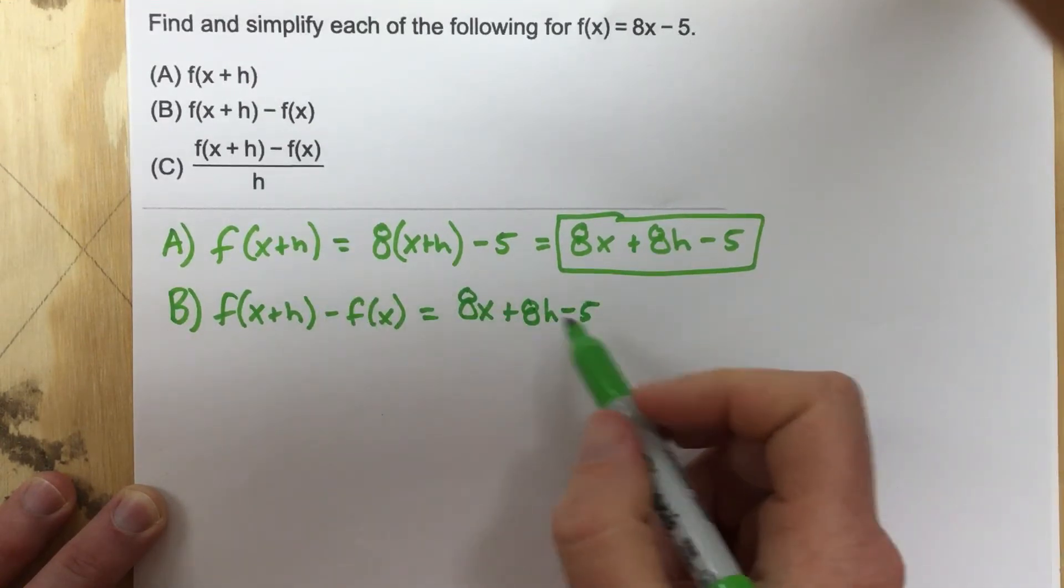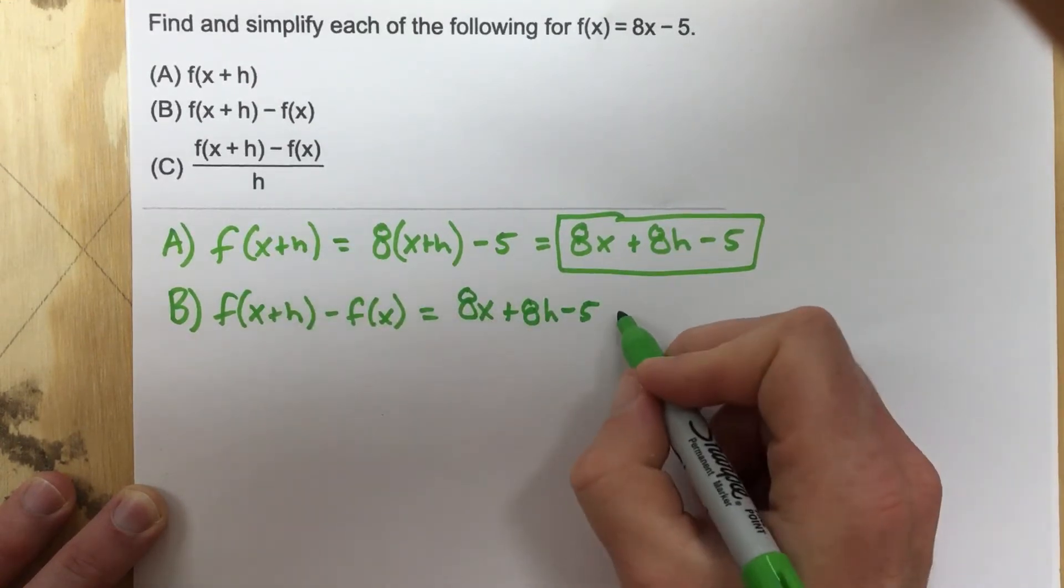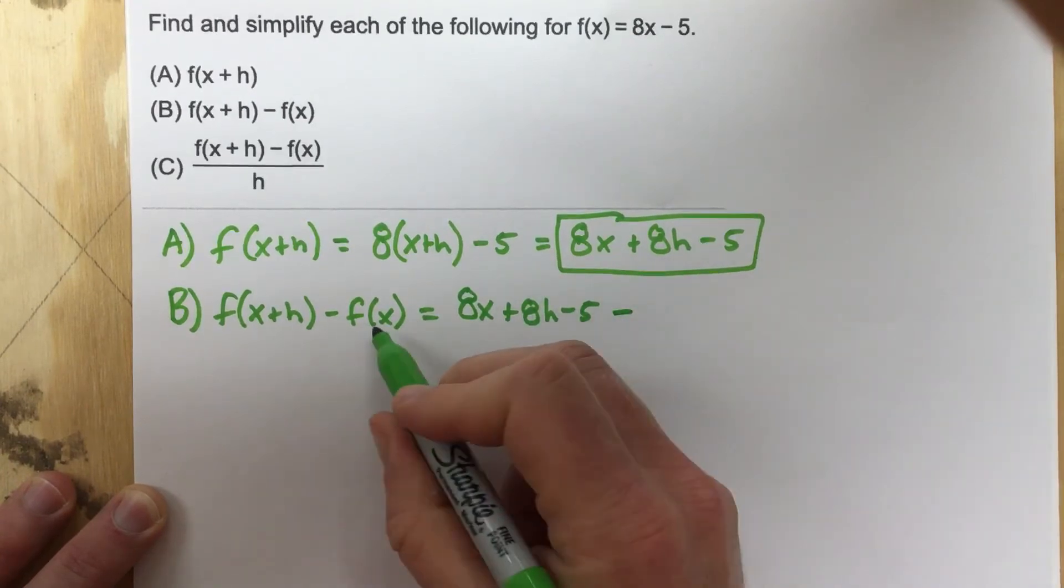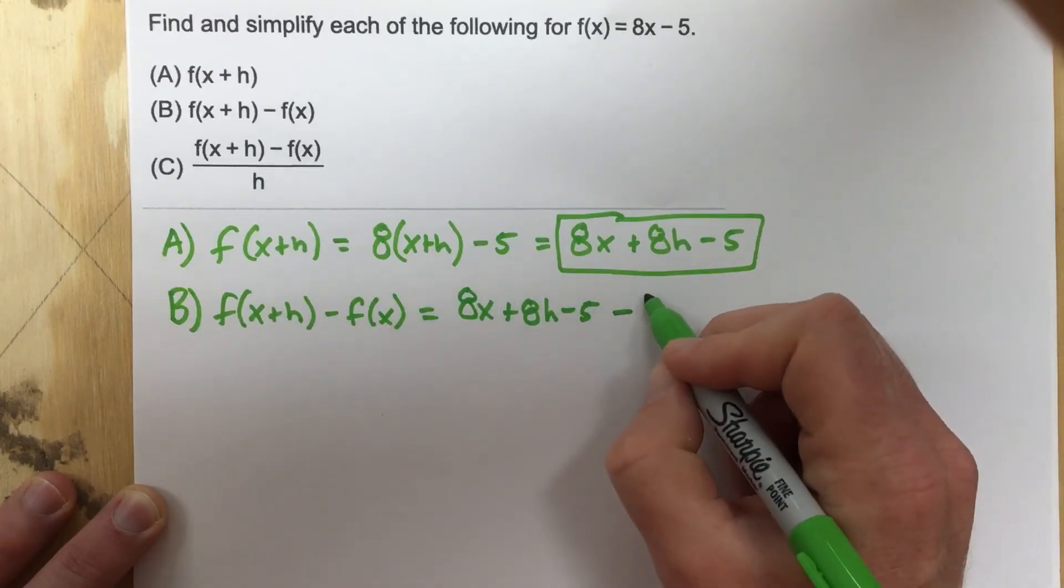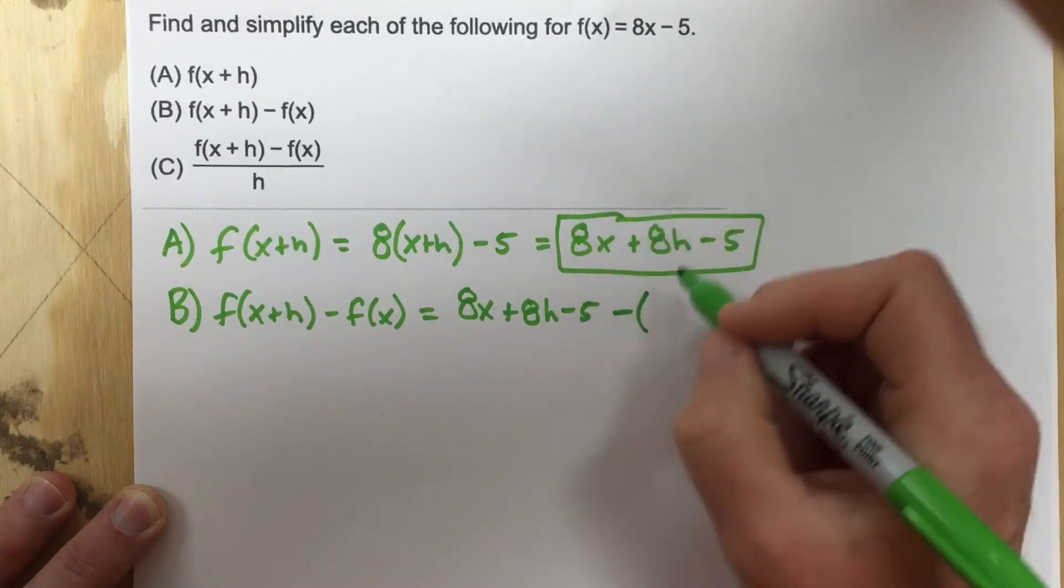Now obviously you could go through and write all the steps out, but we just did that. Then minus the original function. Now you've got to watch out because it says minus f(x), that means minus the whole function, which is 8x minus 5.